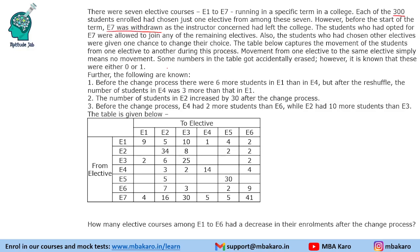Movement from one elective to the same elective simply means no movement. For example, E1 means that 9 students did not change their elective. So this diagonal represents the number of students who did not change their electives. For example, 30 students who were in E5 are still in E5.